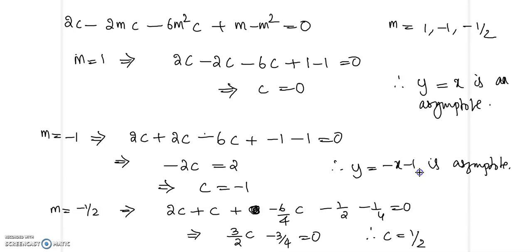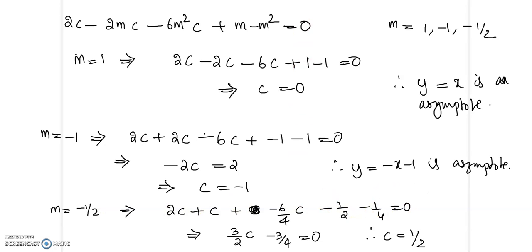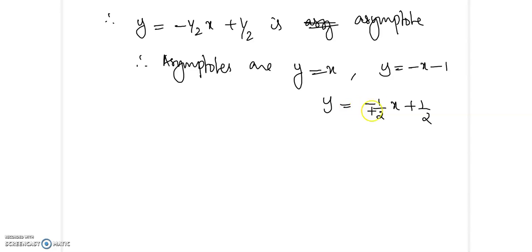So the asymptote is y equal to minus x minus 1. When m is minus 1 by 2, substituting minus 1 by 2, then minus 1 by 4 equal to 0. We get 3c minus 3c by 2, that is 3c by 2 minus 3 by 4 equal to 0. So c equals 1 by 2. Therefore the asymptote is y equal to minus 1 by 2 times x plus 1 by 2.